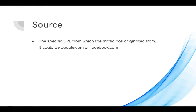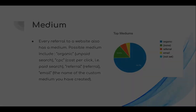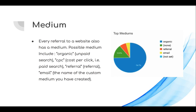The next term is source — the specific URL from which traffic has originated, such as google.com or facebook.com. Source can contain a very long list of sites. To address this, there is medium. Medium shows the type of source your traffic is coming from — examples include organic, referral, and email. However, medium can vary: for social media, people might use 'SM', 'social media', or 'social-media', which appear as different entries in the medium report.